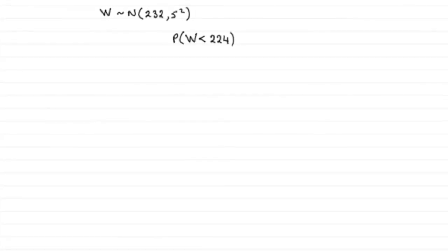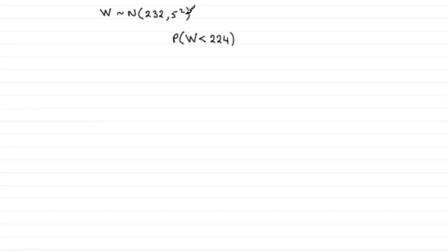This is a great question for revision on the normal distribution — it has many features that should come up in a lot of questions. We have a random variable W representing the weight of coffee in grams in a jar, modeled as a normal distribution with a mean of 232 grams and a standard deviation of 5 grams. Note that the second parameter is always the variance, so that's five squared, or 25.